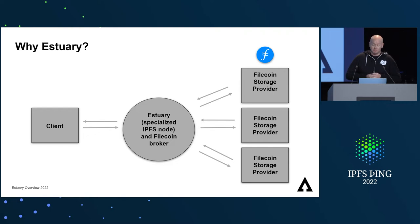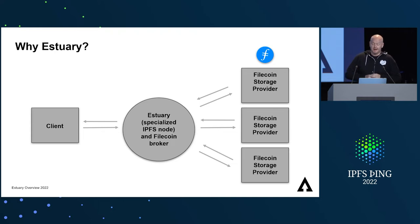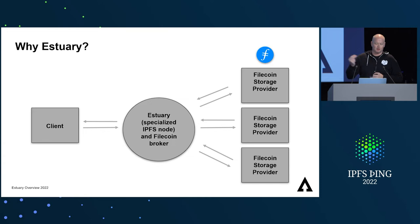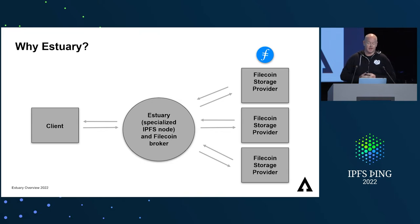Estuary is really built to be a communication and storage broker between the client providing the data and the storage providers on the Filecoin network. The basic flow is: once a deal is made, the provider stores the client's files and the CID on the Filecoin blockchain. Initially, the data is pinned onto the Estuary IPFS node for hot storage, so it's available right away. This process is replicated six times across the Filecoin network to ensure the data is always accessible, in case a storage provider goes down. Once the storage deals are completed, both hot and cold storage become available.